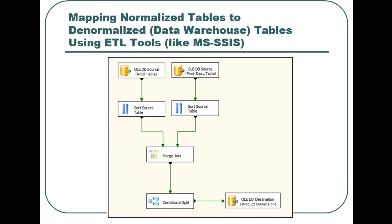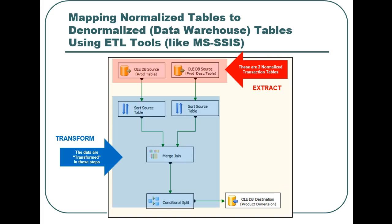This screenshot shows Microsoft's ETL tool called SQL Server Integration Services, or SSIS. In this ETL example, we will first extract data from two transactional tables shown here in red. Next, the sorting and joining steps shown here in blue represent the data transformation. Finally, our now denormalized data are loaded into our product dimension shown here in green, which exists in our data warehouse.